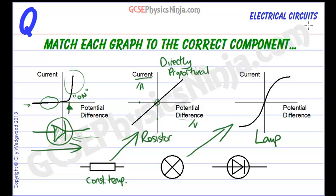So there we are, three components with their current potential difference graphs.